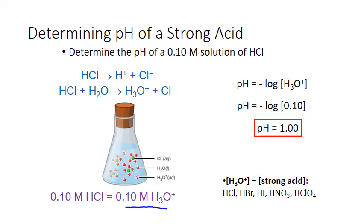A quick word about significant figures and pH values: during the logarithmic transformation, the number of significant figures in the concentration of the hydronium ion gets translated as the number of decimal places to include after the decimal in the pH. In this calculation, 0.10 has two significant figures — the 1 and the 0 after the decimal — which translates into two decimal places in our pH value of 1.00. The number before the decimal represents only the power of 10 portion of the number in scientific notation.